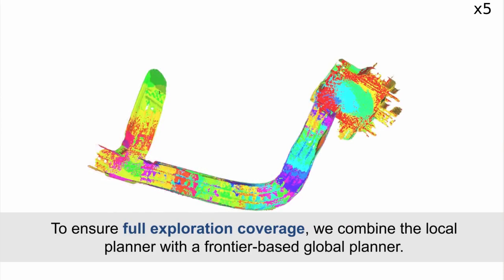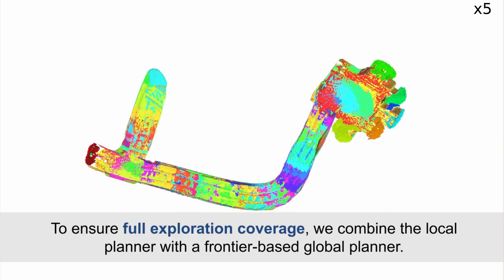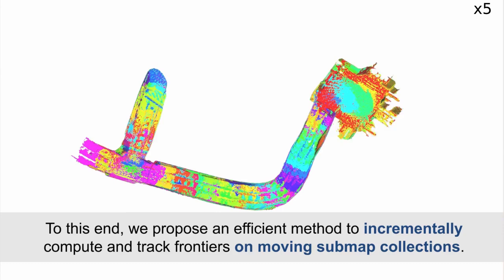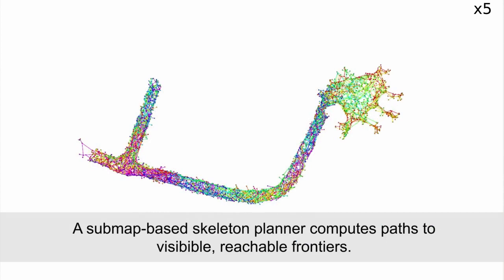To ensure full exploration coverage, we combine the local planner with a frontier-based global planner. To this end, we propose an efficient method to incrementally compute and track frontiers on moving sub-map collections. A sub-map-based skeleton planner computes paths to visible, reachable frontiers.